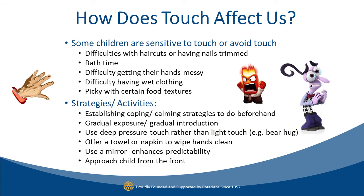Thinking about that continuum for touch: if children are sensitive to touch or avoiding touch, you might see difficulties with haircuts or nail trimming, bath time, getting hands messy, wet clothing, or picky food textures. This sensitive response is where we see that fear or anger response. Some strategies for over-responsive children are to establish coping and calming strategies beforehand, use gradual exposure to things that are alarming, and use deep pressure touch rather than light touch — for example, a big bear hug. Sometimes offer a towel to wipe hands when distressed, use a mirror to enhance predictability during dressing, and always approach from the front so they're not surprised by touch. Predictable input is always more tolerable.